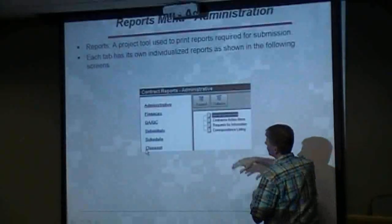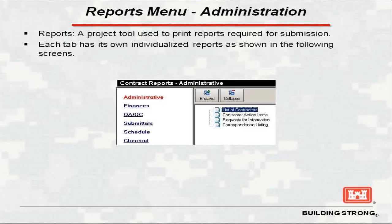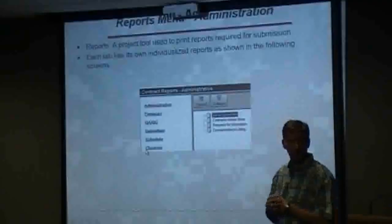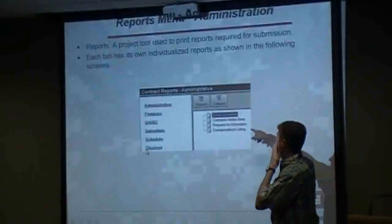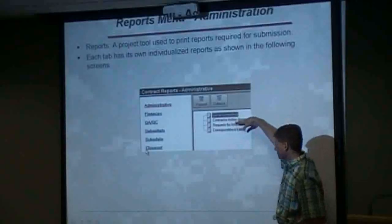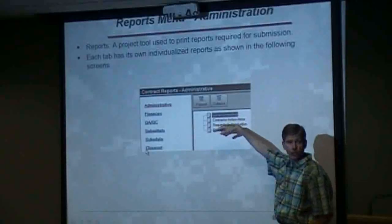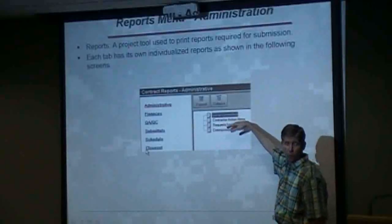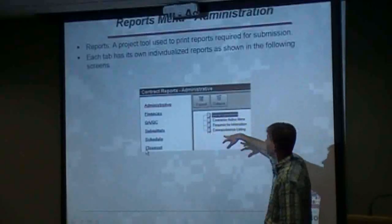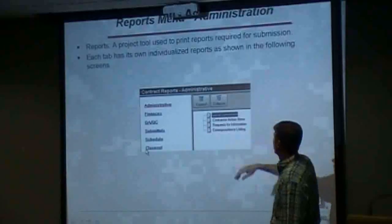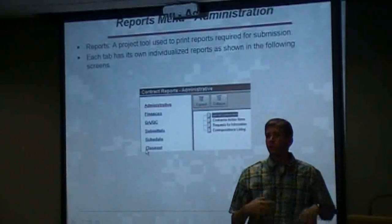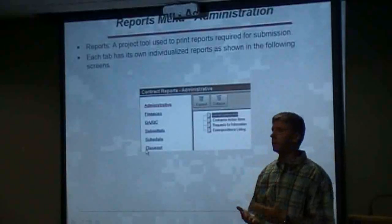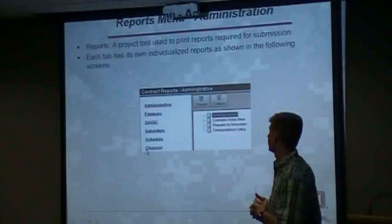Under administrative, you can get a list of contractors — you probably already have a better list, but you can still get one. Here are your action items again, which you can run as a report instead of hitting that first tab. You also have RFIs and correspondence listings as a tracking mechanism under administrative.